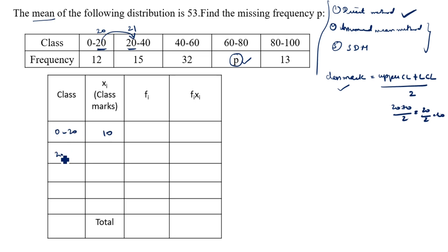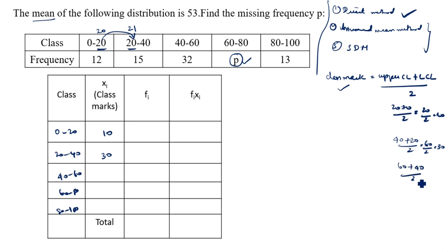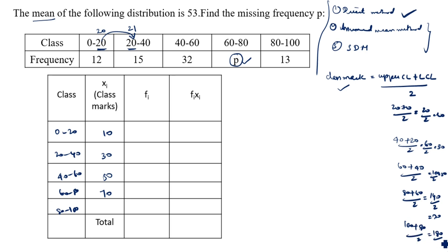For the classes 0–20, 20–40, 40–60, 60–80, 80–100: the first class mark is 10. Second: (40 + 20) / 2 = 60 / 2 = 30. Third: (60 + 40) / 2 = 100 / 2 = 50. Fourth: (80 + 60) / 2 = 140 / 2 = 70. Fifth: (100 + 80) / 2 = 180 / 2 = 90. So xi values are 10, 30, 50, 70, 90.